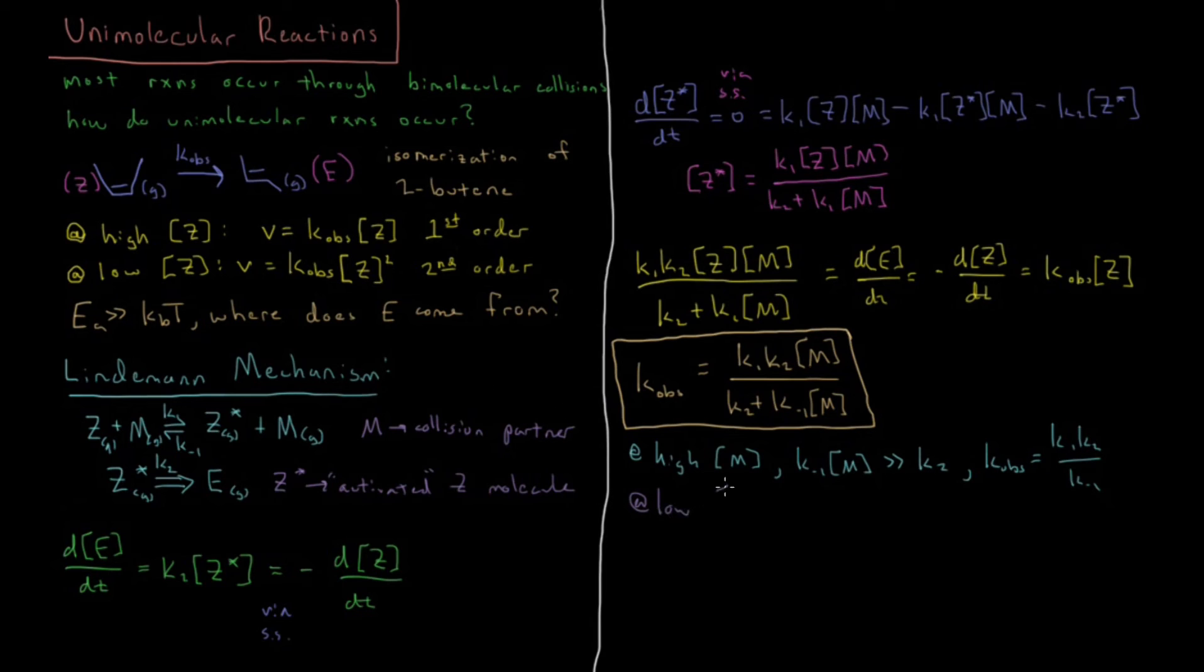At low concentration of your collision partner M, what you have is K2 is much greater than K-1 M. In that circumstance, K observed is going to equal, well, K2 much greater than K-1 M gives you K1 times M divided by K2, which simplifies to K1 times M.